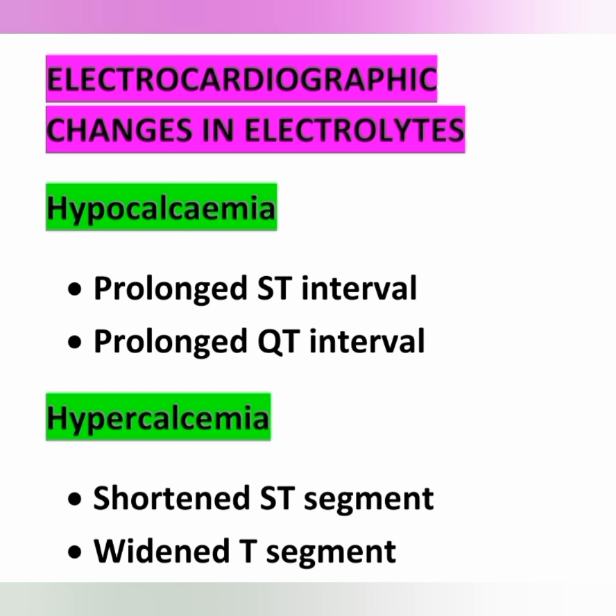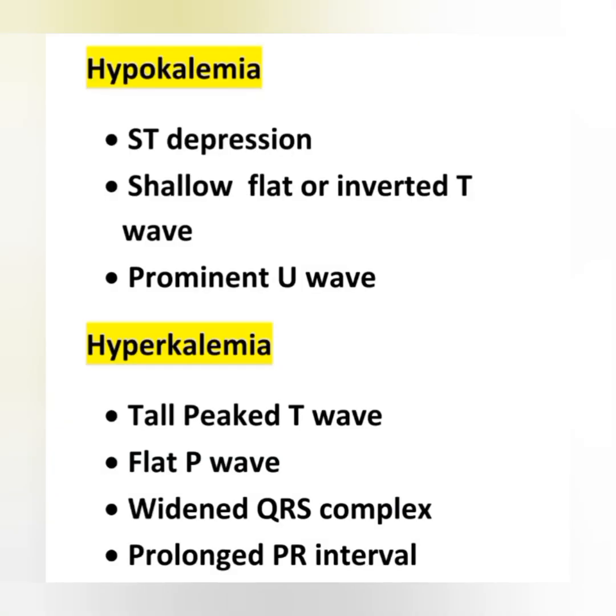First, ECG changes in hypocalcemia: there is a prolonged ST interval and prolonged QT interval — both ST and QT intervals are prolonged in hypocalcemia. In hypercalcemia, there is a shortened ST segment and widened T segment — either shortened ST segment or widened T segment can be expected.